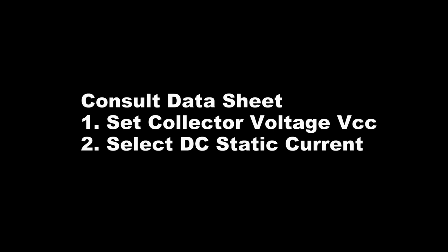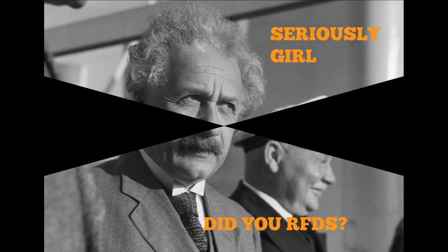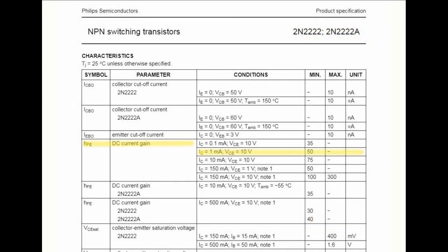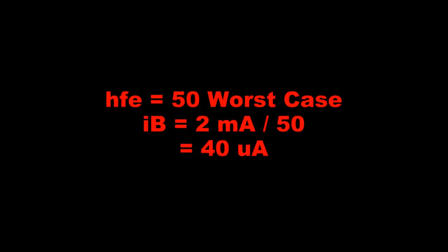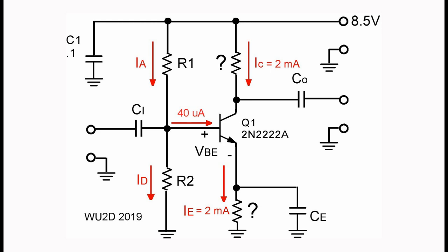Higher current means more bandwidth, so 2 milliamps would be better than running 100 microamps. From the data sheet, the HFE or current gain at 1 milliamp is around 50, which is close to our operating point, and the saturation voltage from collector to emitter is 400 millivolts. I want to use a 9-volt battery, so I'm going to select 8.5 volts as my VCC — this gives me a little design margin as the battery goes down. We need to calculate IB: how much base current will it take to turn the transistor on so the full 2 milliamps can flow in the collector? Our worst-case HFE, sometimes called current gain or beta, is 50 for the 2N2222. So we simply divide 2 milliamps by 50 and arrive at 40 microamps of base current. Keep in mind we'll have to design a voltage divider with enough stiffness to provide this 40 microamps without loading.